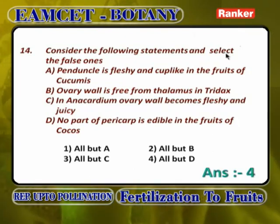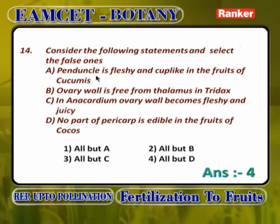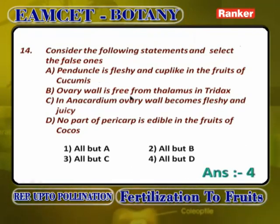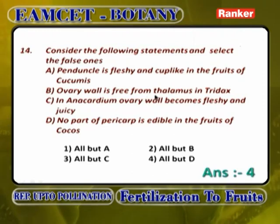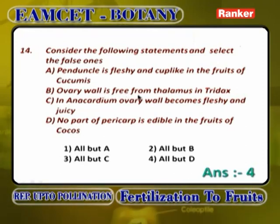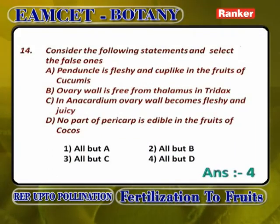Consider the following statements and select the false one. Peduncle is fleshy and cup-like in fruits of Cucumis is wrong. Ovary wall is free from thalamus in Tridax is wrong — in Tridax, the flower is epigynous, where thalamus is a deep cup-like structure with the ovary completely fused with the thalamus. In Anacardium, ovary wall becomes fleshy and juicy is wrong — in Anacardium, the pedicel becomes juicy and fleshy.